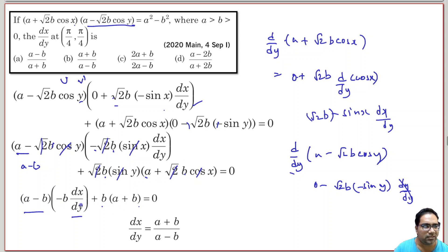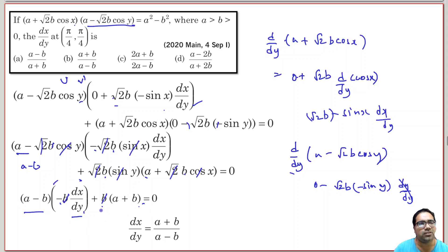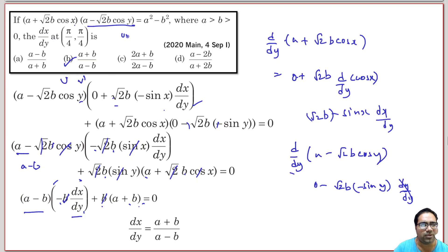If you take the -b·(dx/dy) term to the right side, the negative becomes positive, and we also cancel the b terms. This becomes dx/dy = (a + b)/(a - b). That is the given answer — a very easy one. We just need to differentiate slightly carefully using the plain uv product rule formula.